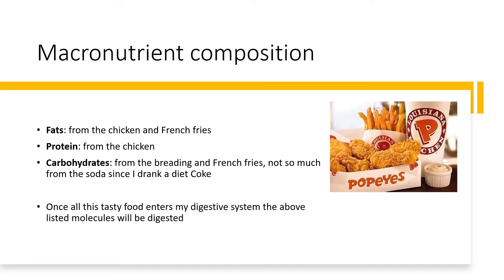Let's look at the macronutrient composition of this cheat meal. You have fats, which come from the chicken and french fries. You have protein, which comes from the chicken. And you have carbohydrates, which come from the breading around the chicken and the french fries — probably not from the Diet Coke I drank. Once all this tasty food enters my digestive system, the macromolecules will be digested.